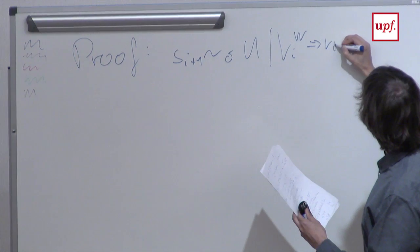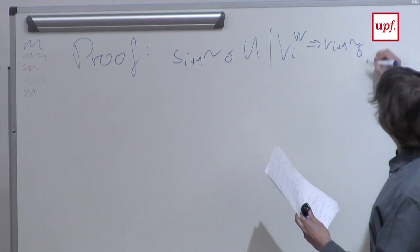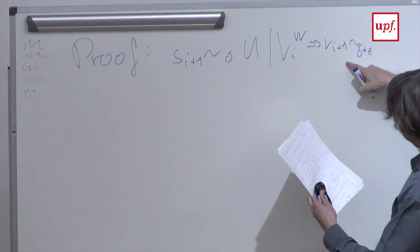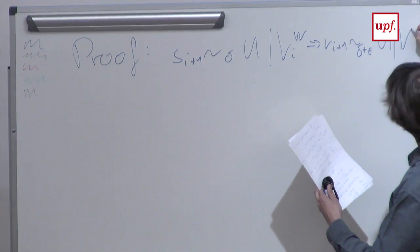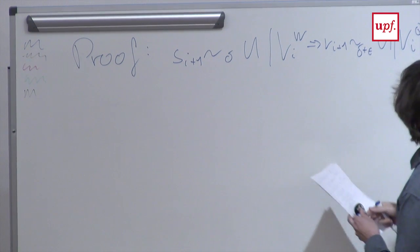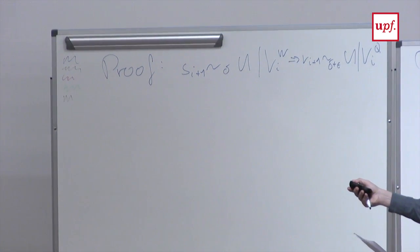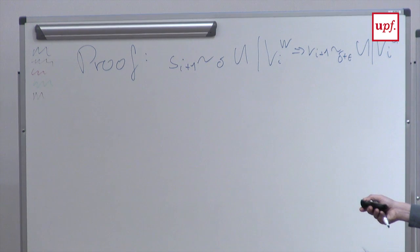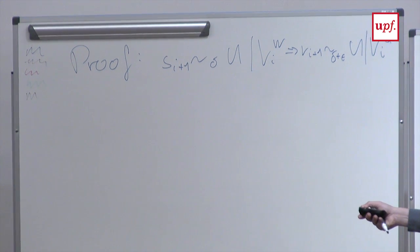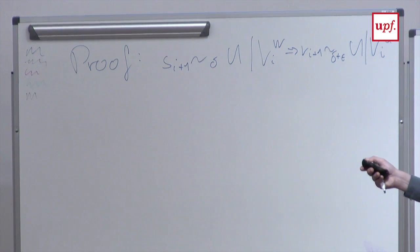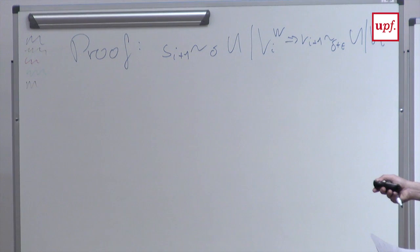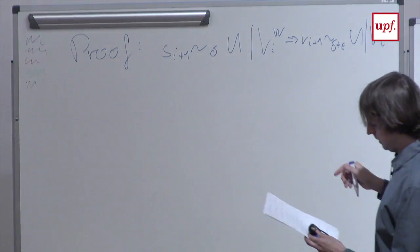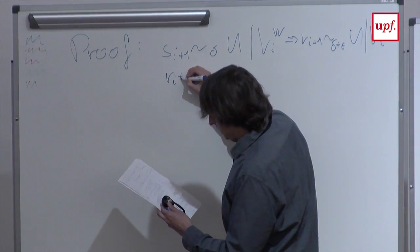Combining these two steps: S1 uniform implies R1 is epsilon-close to uniform, which implies S2 is 2 epsilon-close to uniform, and so on — giving by induction that S_{i+1} is 2 epsilon·i close to uniform from Wendy's view. And a symmetric statement holds for the R_i's from Quentin's view.